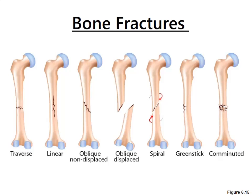A greenstick fracture is a break in the bone that's not all the way through — the bone is still together, broken but still intact. If I take a marker and cut the cap away into two pieces, that's a complete fracture because it broke into two complete pieces. Incomplete means broken but still connected — that's what a greenstick fracture is.